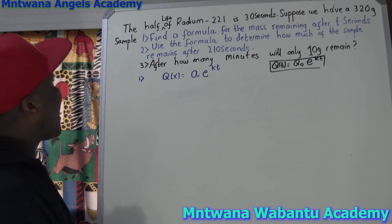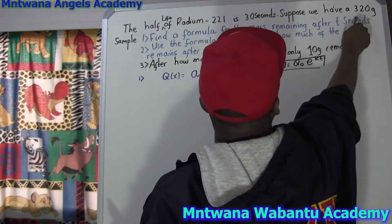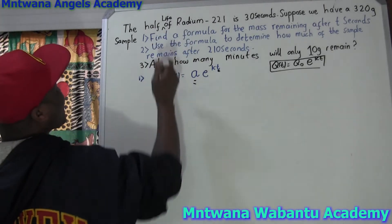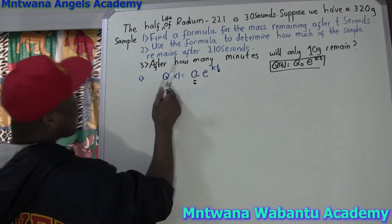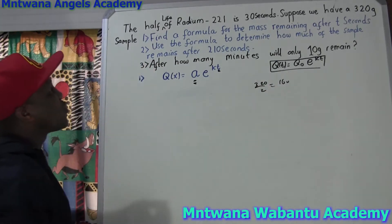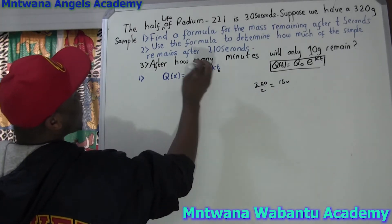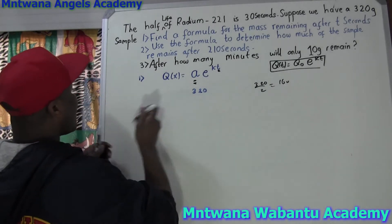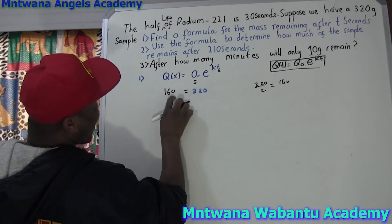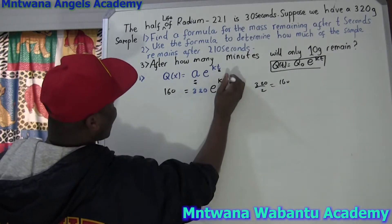I prefer to personally write it like this: Q of a certain time T, equal to Q initial times E to the KT. Some other books write it differently. The important information now — they say 30 seconds, so we know T equals 30 seconds. They say suppose you have 320 grams, so our initial is 320. Since they said half-life, the half of 320 is going to be 160. So, Q final is 160, equal to 320 times E to the K times 30.